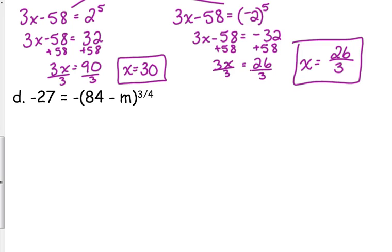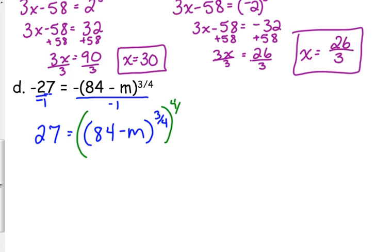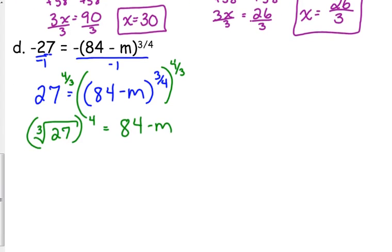That negative is like a negative 1. So if you want to look at it as you're dividing by negative 1, whatever, just so you get positive 27 is equal to 84 minus m to the 3 fourths. Expression is isolated, so we raise it to the reciprocal power. So that is the cubed root of 27 raised to the 4th is equal to 84 minus m. Now, here's what I was talking about. The cubed root of 27 only has one answer. There's only one way to get 27 if you cube a number.